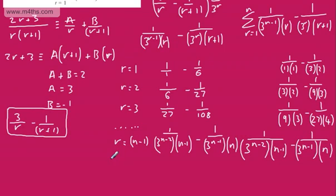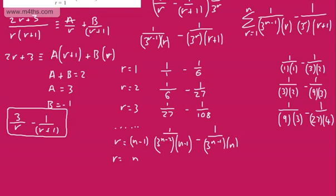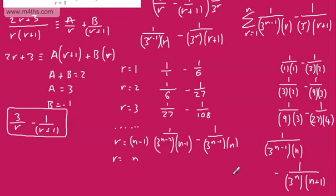And finally, when R equals N: we're going to have 1 over 3 to the N minus 1 multiplied by N, minus 1 over 3 to the power of N multiplied by R plus 1 — R is N, so that's N plus 1. So we end up with 1 over 3 to the N minus 1 times N, minus 1 over 3 to the N times N plus 1.